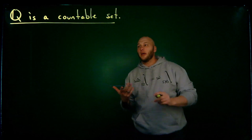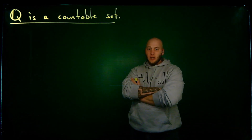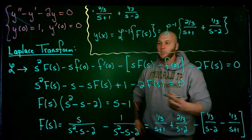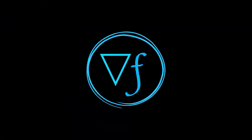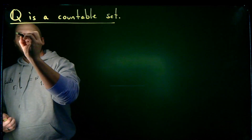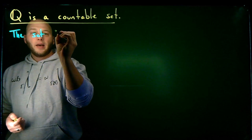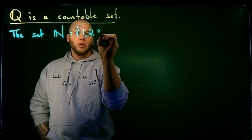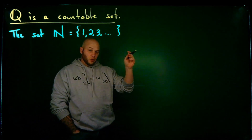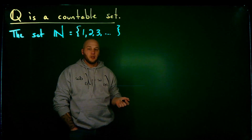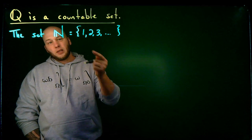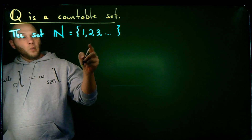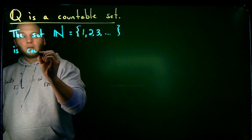I want to take a look at showing how and why the set of rational numbers is actually countable. Remember that the set N, which is called the natural numbers, consists of 1, 2, 3, etc. For this video the natural numbers is 1, 2, 3, etc. The set N, which is the natural numbers, is countably infinite.